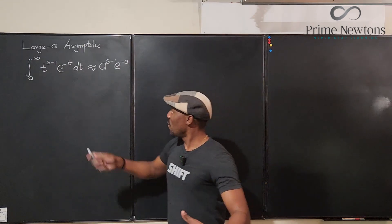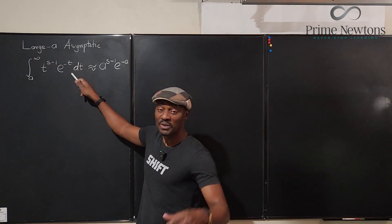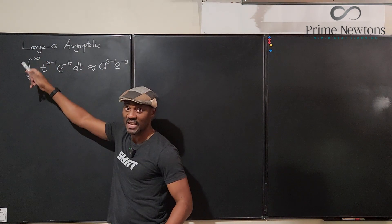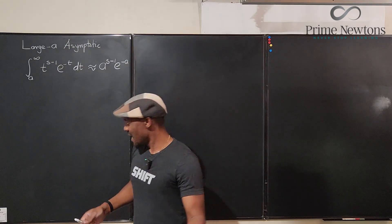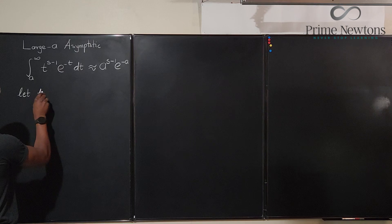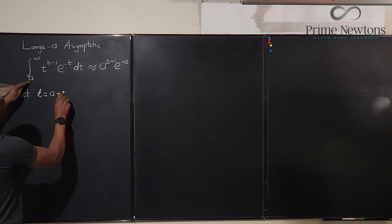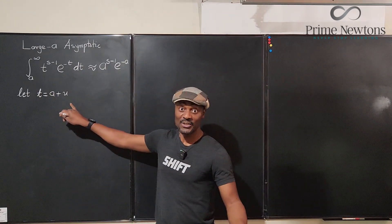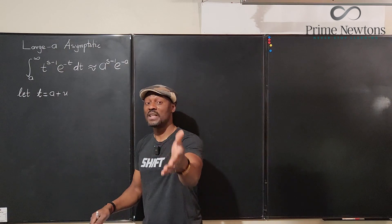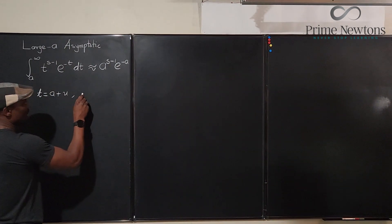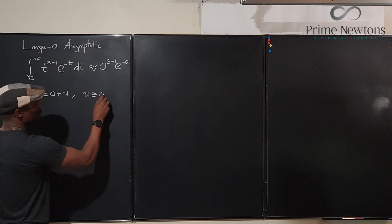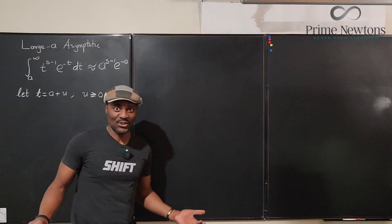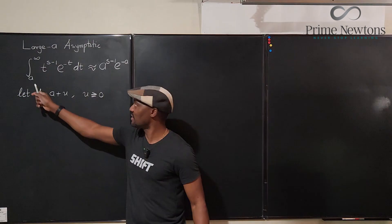The best way to approach this is to understand that whenever we are integrating with respect to t, all the values of t in this integral will start from a all the way to infinity. So it's okay to let t = a + u, where u is anything you add to a. It's possible you added nothing, so u must be greater than or equal to zero — u is just an addition to a, with the minimum value of t being a, since that's the lower limit of integration.